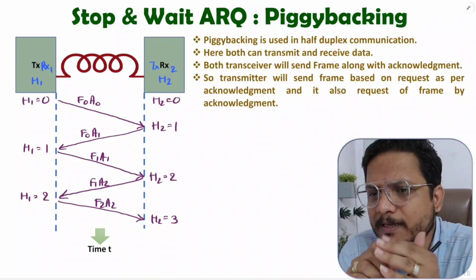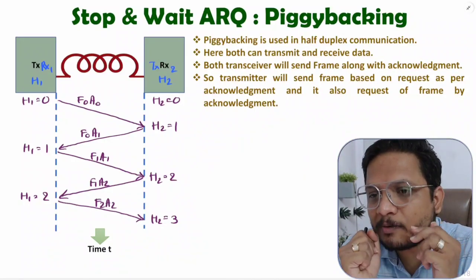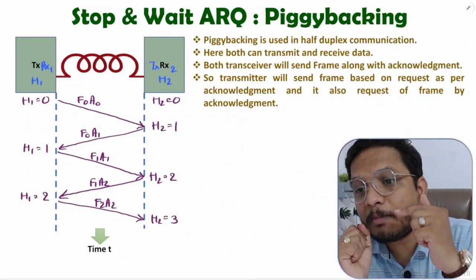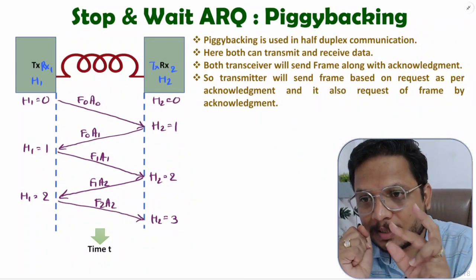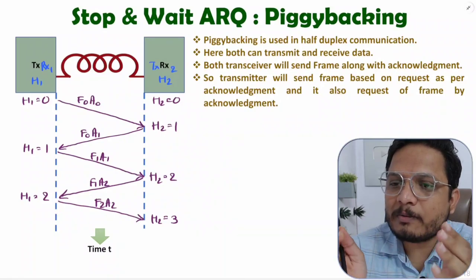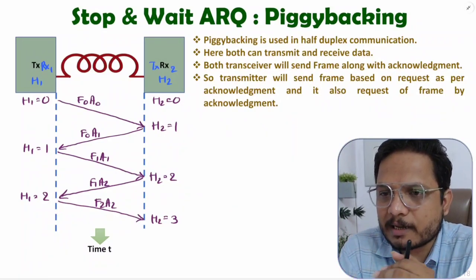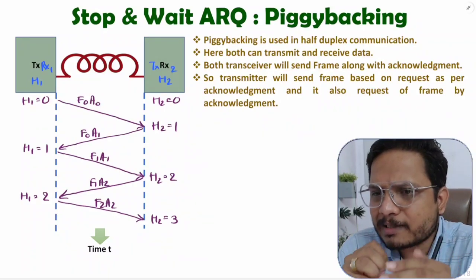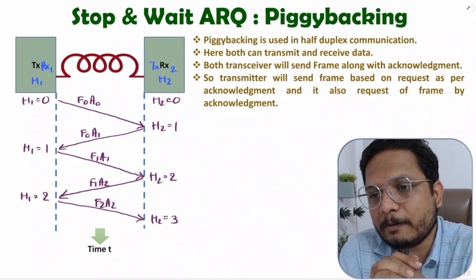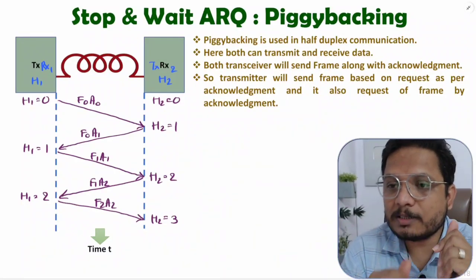In piggybacking with half-duplex communication, both hosts can transmit and receive data. Along with each frame, an acknowledgement is sent. The acknowledgement indicates that the previous frame was received and specifies what frame should be transmitted next. This is how piggybacking works in Stop and Wait ARQ. I hope all four special cases are now clear. Please note any questions in the comment section — thank you for watching.